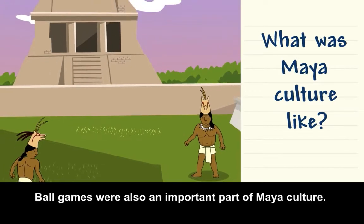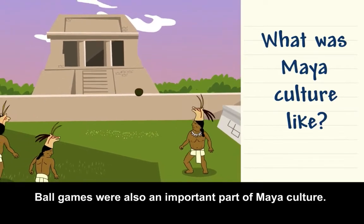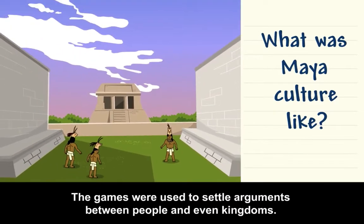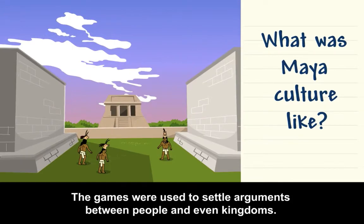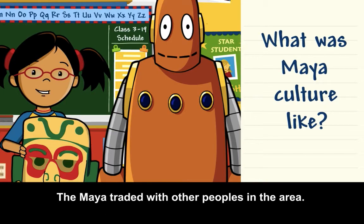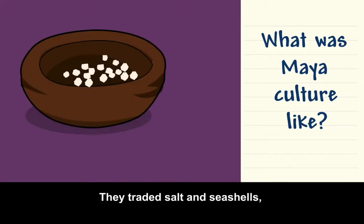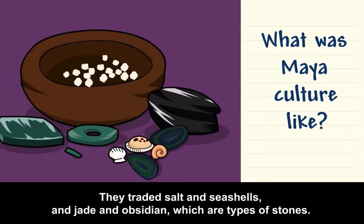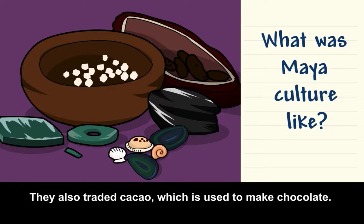Ball games were also an important part of Maya culture. The games were used to settle arguments between people and even kingdoms. The Maya traded with other peoples in the area. They traded salt, seashells, jade, and obsidian, which are different types of stones. They also traded cacao, which is used to make chocolate.